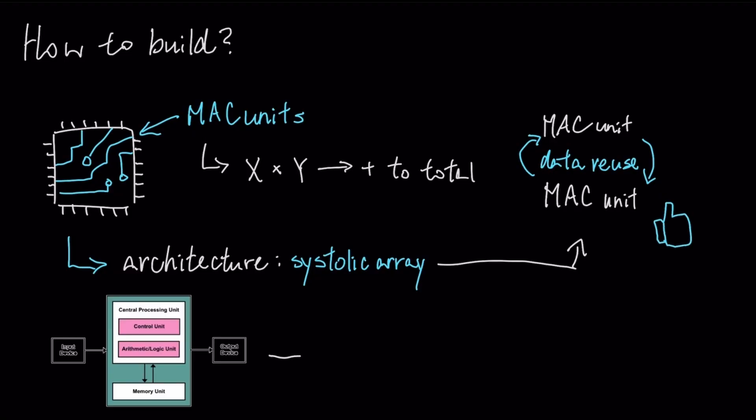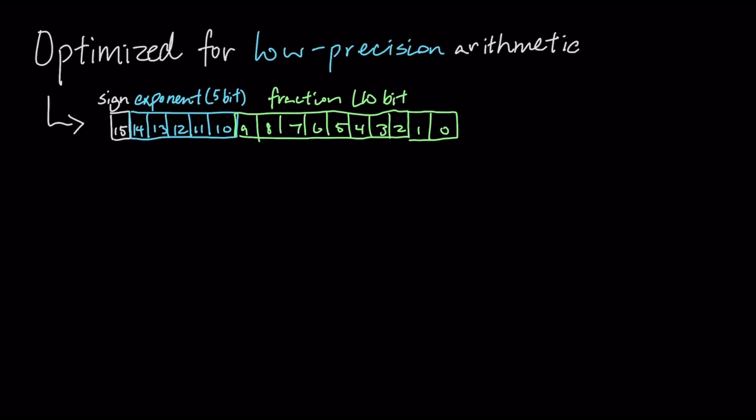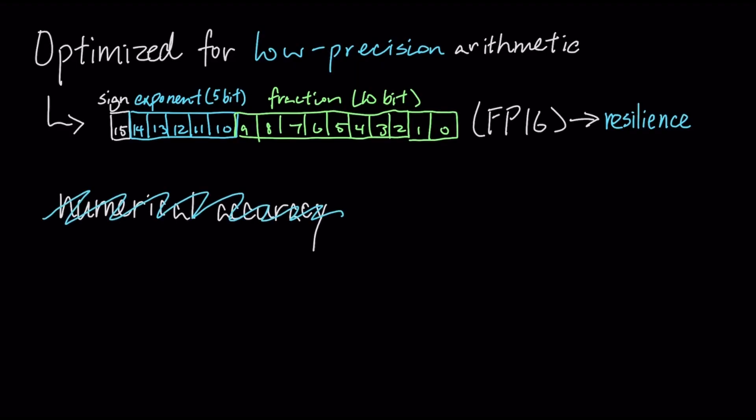And then it's optimized for low-precision arithmetic, like FP-16. This leverages the resilience of neural network inference to lower precision, a trade-off that sacrifices a degree of numerical accuracy to effectively double performance and halve the memory footprint.